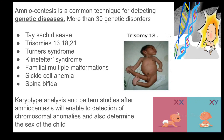Amniocentesis is a common technique for detecting genetic diseases. More than 30 genetic disorders can be detected, including Tay-Sachs disease, Trisomy 13, 18 and 21, Turner syndrome, Klinefelter syndrome, familial multiple malformations, sickle cell anemia, and spina bifida. Karyotype analysis and pattern studies after amniocentesis enable the detection of chromosomal anomalies and also determine the sex of the child.